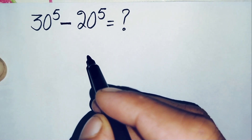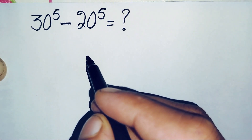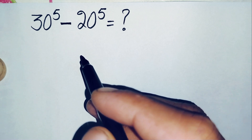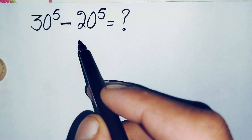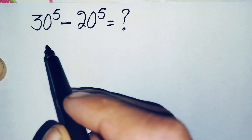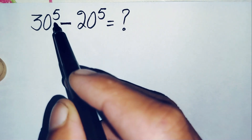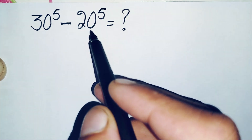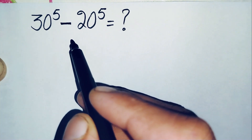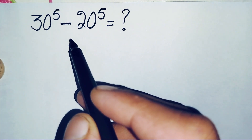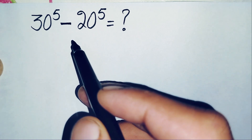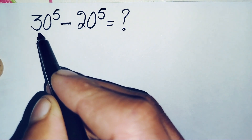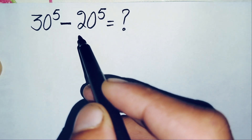Hello everyone, welcome back to Master Explorer. In this video, I'm going to solve and find the value of this math problem: 30 raised to power 5 minus 20 raised to power 5. I will try to find out this value without using a calculator. To solve this, we will first factorize the two bases, 30 and 20.